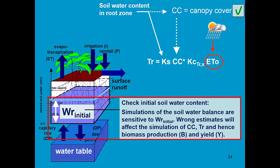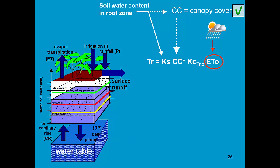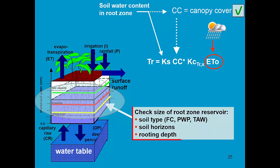The first thing to check is the initial soil water content. Simulations of the soil water balance are very sensitive to the initial soil water content. Wrong estimates will affect the simulation of canopy cover, transpiration, biomass production, and yield. We have discussed options to estimate initial soil water content in previous training modules. These can only work correctly if the size of the reservoir of the root zone is correct.